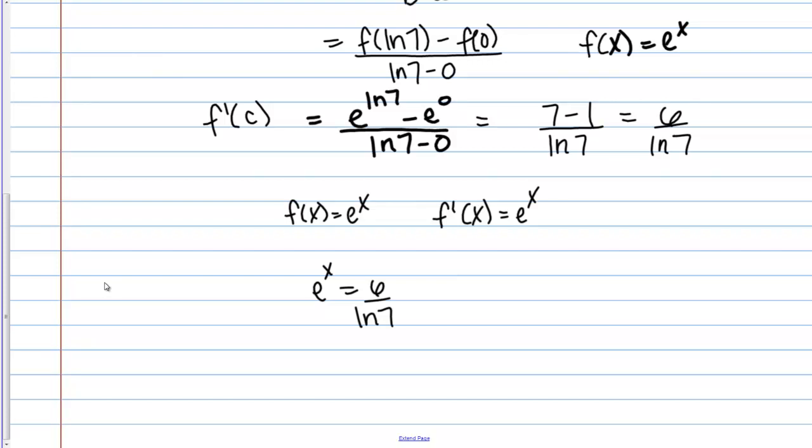Well a very useful trick is to take the natural log of both sides. It's going to make things work out really nicely in this case. Because what happens is on the left hand side I have the natural log of E to the X. But because the natural log and E are inverses, I'm just left with X on the left hand side. So I get X equals the natural log of 6 over the natural log of 7. This is what I was looking for.